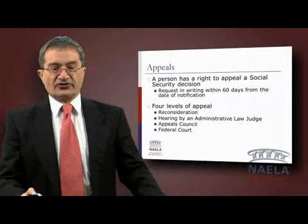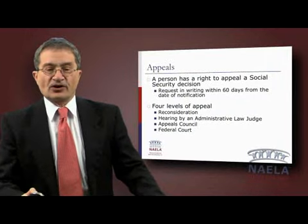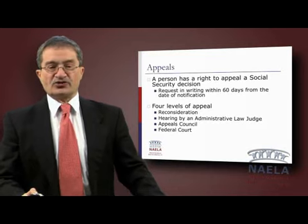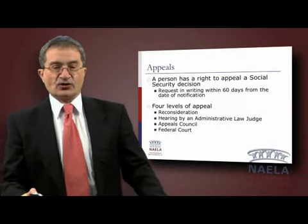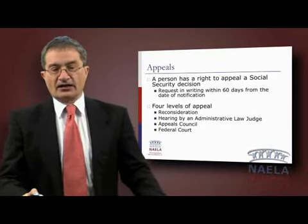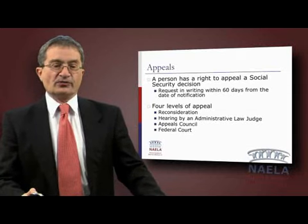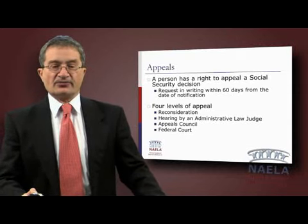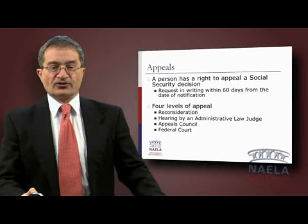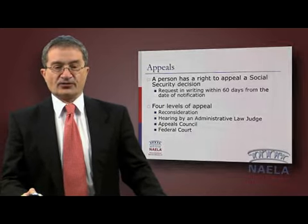There is an appeal process with different levels. There must be a request in writing within 60 days from the date of notification of a problem, and then there are four levels after that: reconsideration, hearing by an administrative law judge, appeals before the SSA, and finally going into federal court.